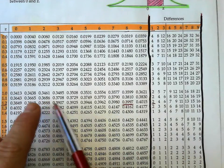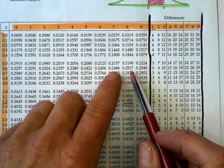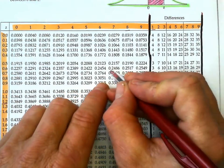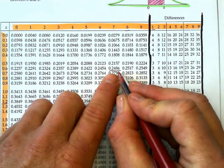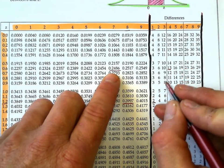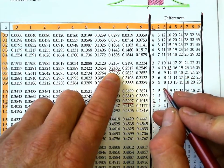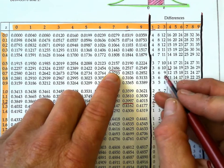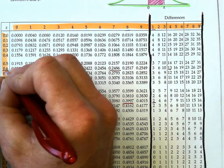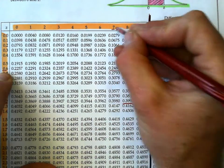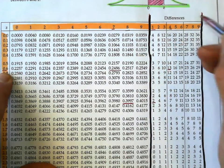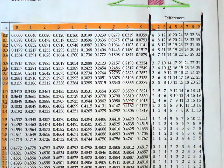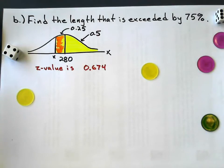Remember 0.25 is my probability. So I look up, don't want to go too over, I'll see if I can get close. That's 0.2486. And if I add 13 more, I get 0.2499. Close enough. At 0.674.